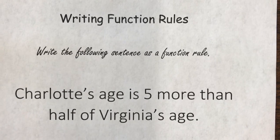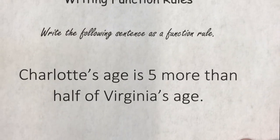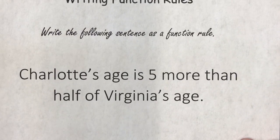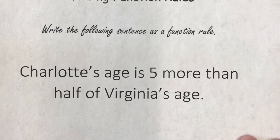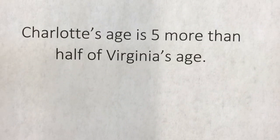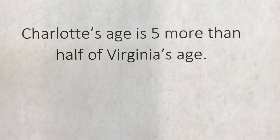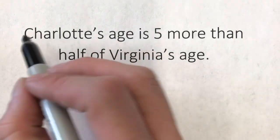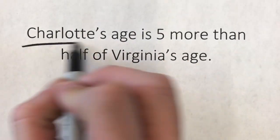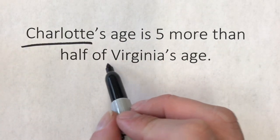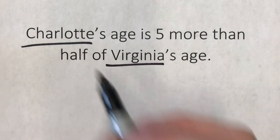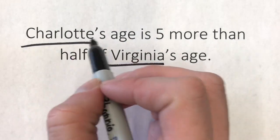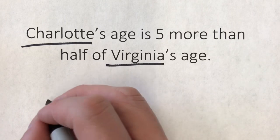What's your function rule? Well, we're going to write a sentence using this sentence: Charlotte's age is five more than half of Virginia's age. We have two people — Charlotte and Virginia.